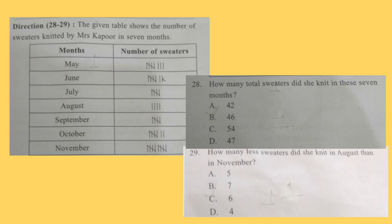Question 29: How many less sweaters did she knit in August than in November? You can see in August she knitted 4 sweaters and in November she knitted 10 sweaters, so answer will be 10 minus 4. Option C, 6 is the answer.